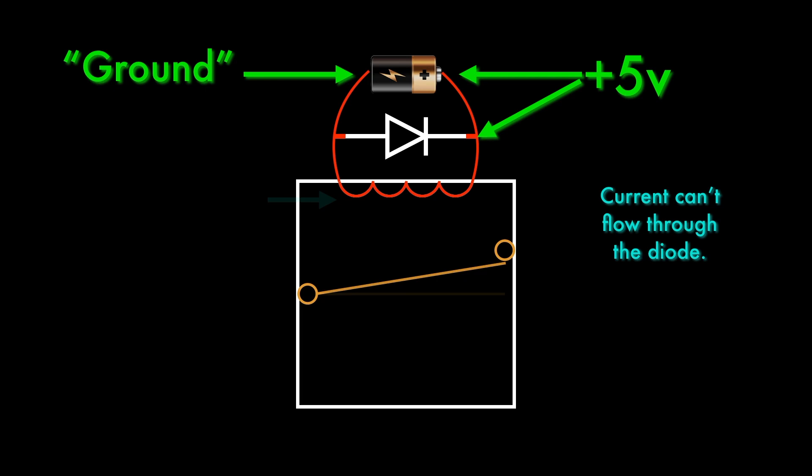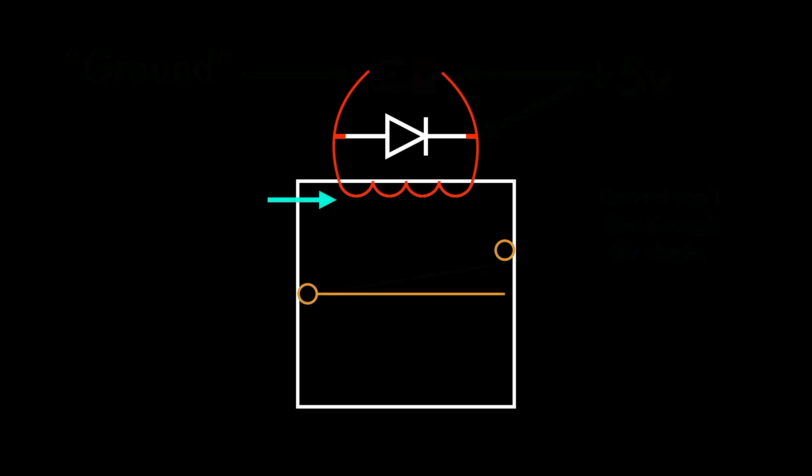But now consider what happens when the relay turns off. Suddenly, a huge voltage spike appears on the coil's grounded terminal, which is also connected to the diode. The other terminal of the diode is no longer connected to a voltage source, so its voltage might as well be zero. The diode is now forward biased, and it will conduct current.